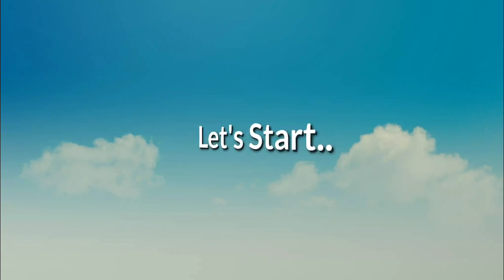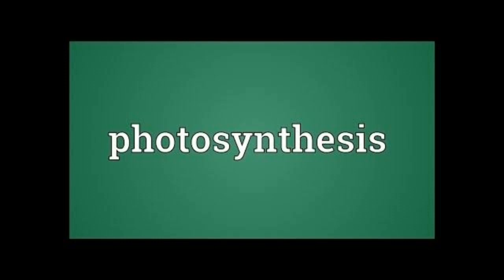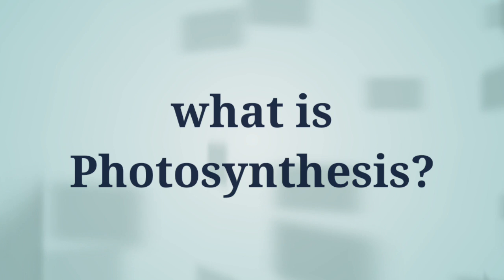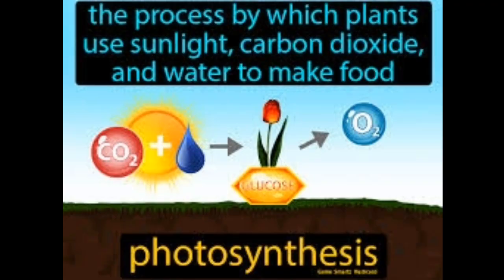Let's start plant physiology with the photosynthesis process. When talking about green plants and photosynthesis, the first question that comes to mind is: what is photosynthesis? The answer is: this is the process by which plants use sunlight, carbon dioxide, and water to make food. This process is known as photosynthesis.